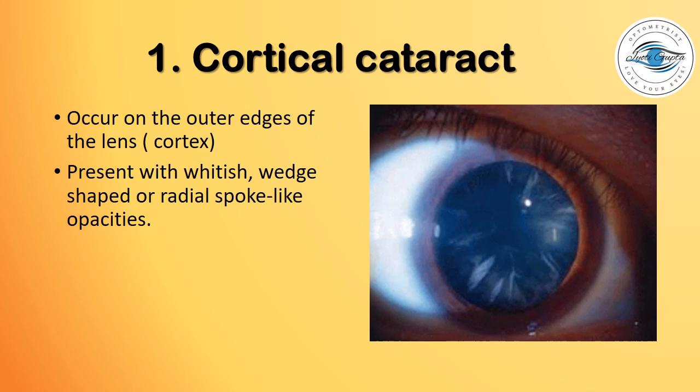Cortical cataracts occur on the outer edge of the lens cortex and present with whitish, wedge-shaped or radial spoke-like opacities, as seen in this photograph.